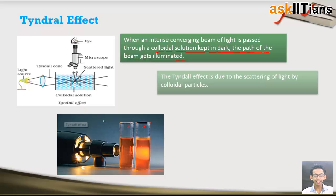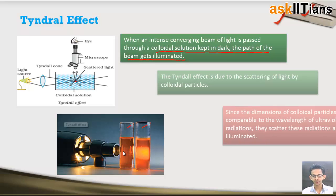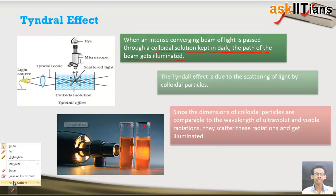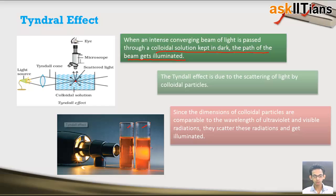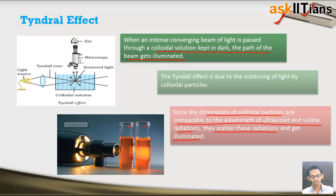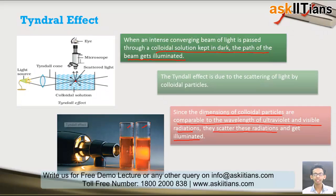The next question is: why do only the colloidal particles scatter light and not the particles of true solutions? The answer is that in order to scatter light, a particle's size must be comparable with the wavelength of light. In colloidal solutions, the dimension of the colloidal particles is comparable to the wavelength of ultraviolet and visible radiation, so they scatter these radiations and get illuminated. In true solutions, the particle size is very small compared to the wavelength of light, so they do not scatter and their path does not become visible.